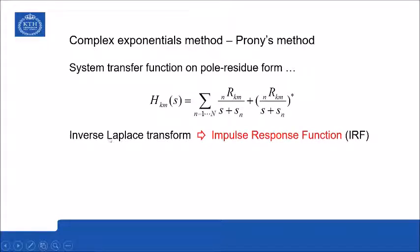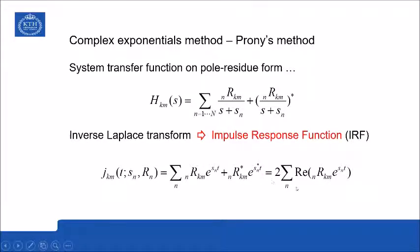Now if we apply the inverse Laplace transform on this, we get the impulse response function. J here denotes the impulse response function corresponding to H, and if we make use of the fact that these terms are complex conjugates, we can write this as a real function.